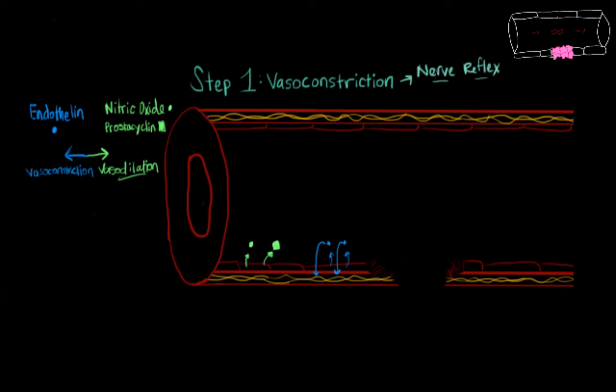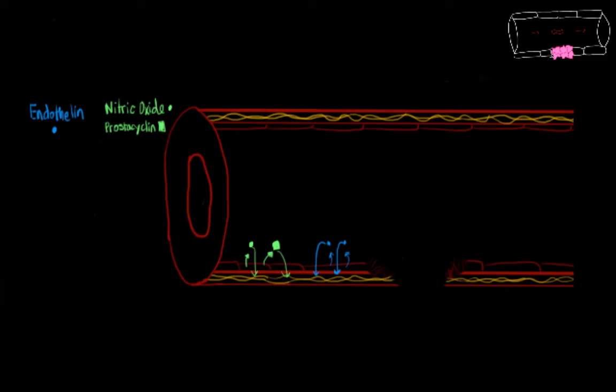But what happens during an injury to our blood vessels is that we lose the amount of nitric oxide and prostacyclin that we make. So endothelin wins over because there's no more nitric oxide and prostacyclin. So we're going to get vasoconstriction. And now, after vasoconstriction, we get platelet adhesion.